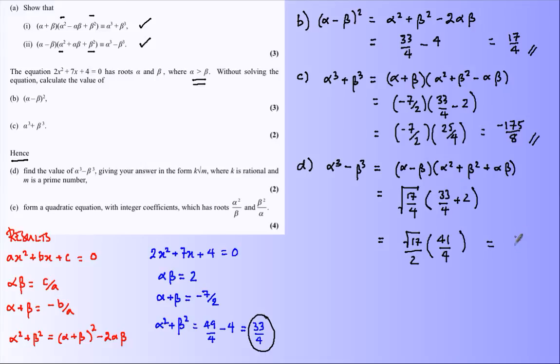And this thing here 33/4 + 2, 33 + 8 over 4, 41/4. I believe my final answer for that is 41/8 multiplied by root 17. Done.